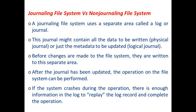If the system crashes during the operation, there is enough information in the log or journal to replay the log record and complete the operation. A journaling file system maintains two types of information: the physical journal contains the data to be written, while the logical journal contains the metadata to be updated.